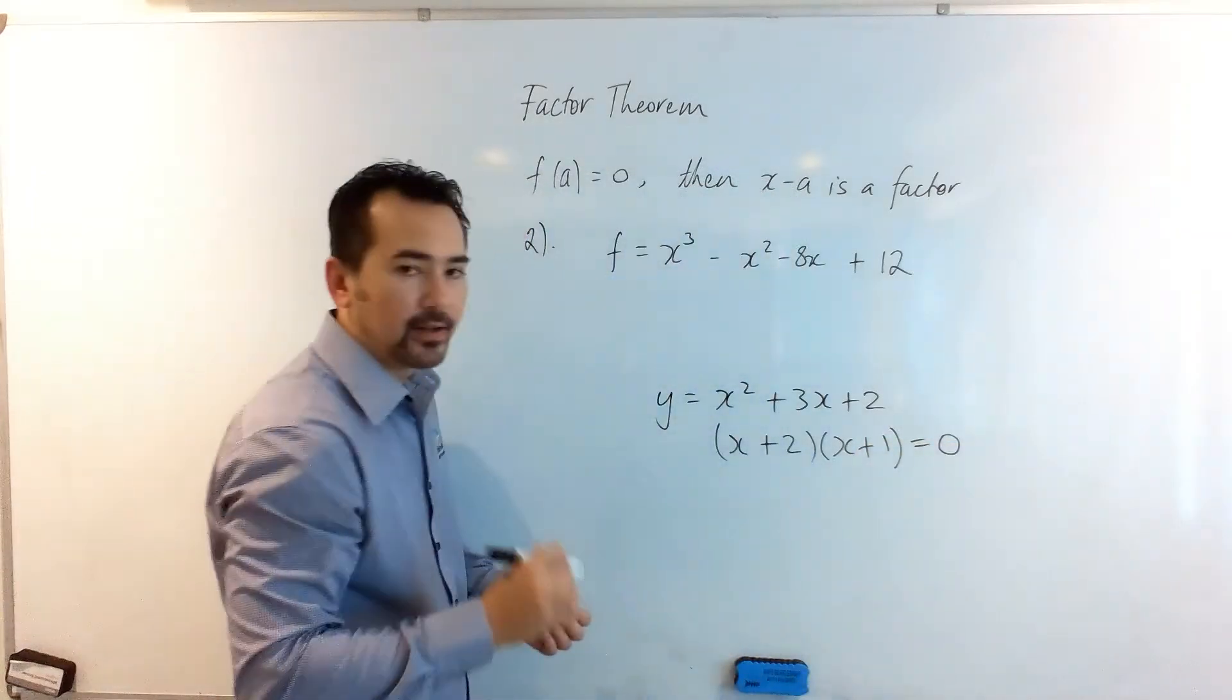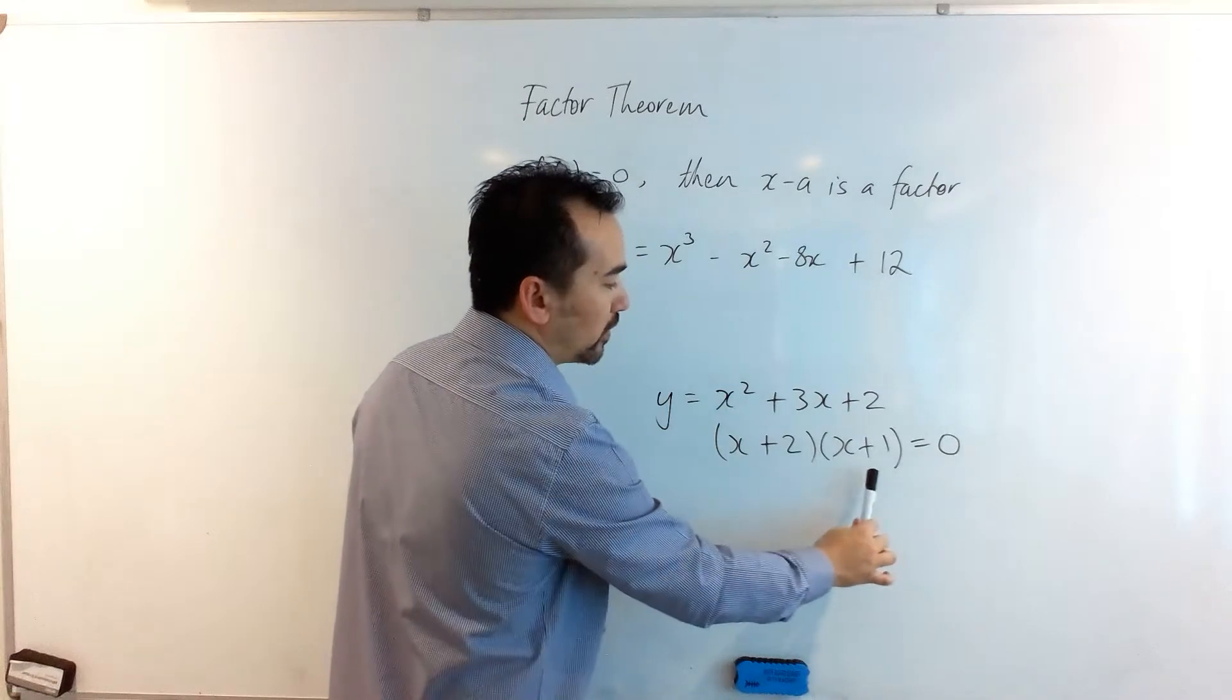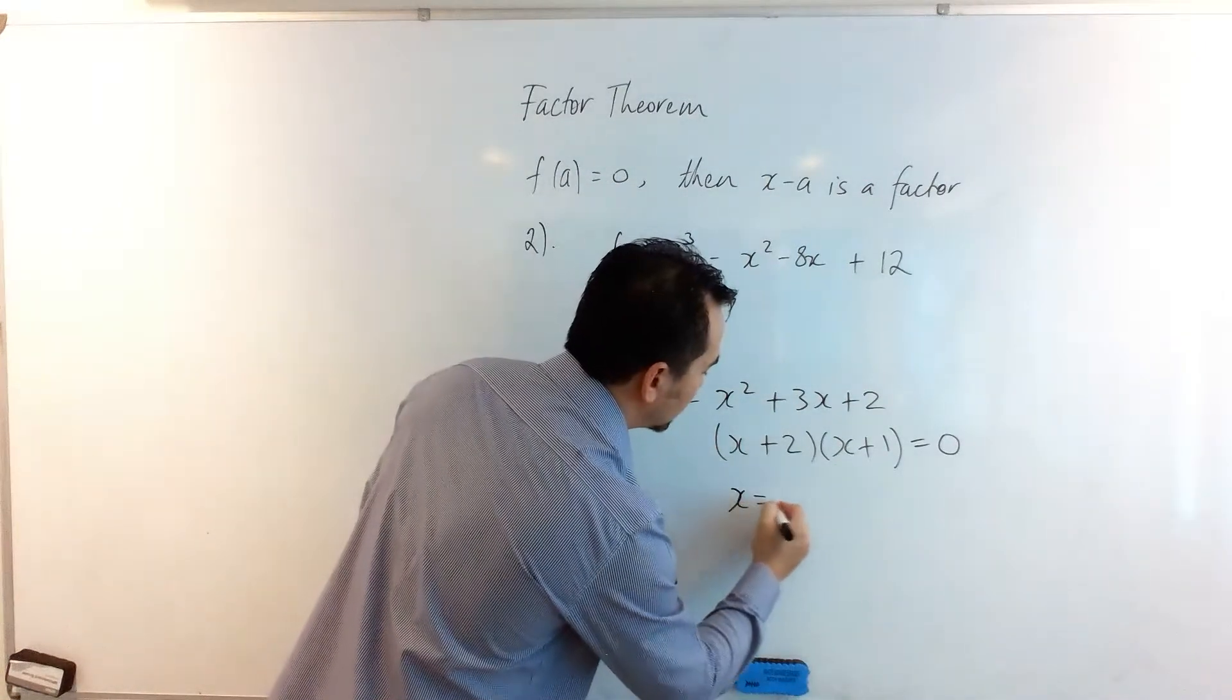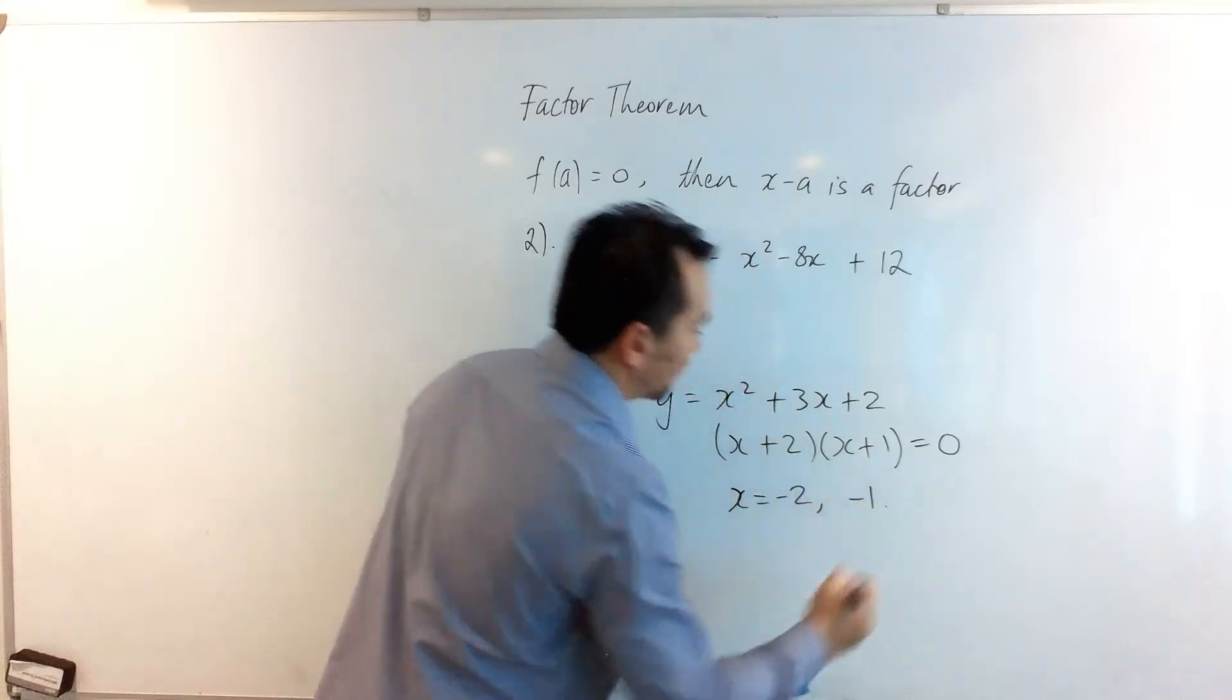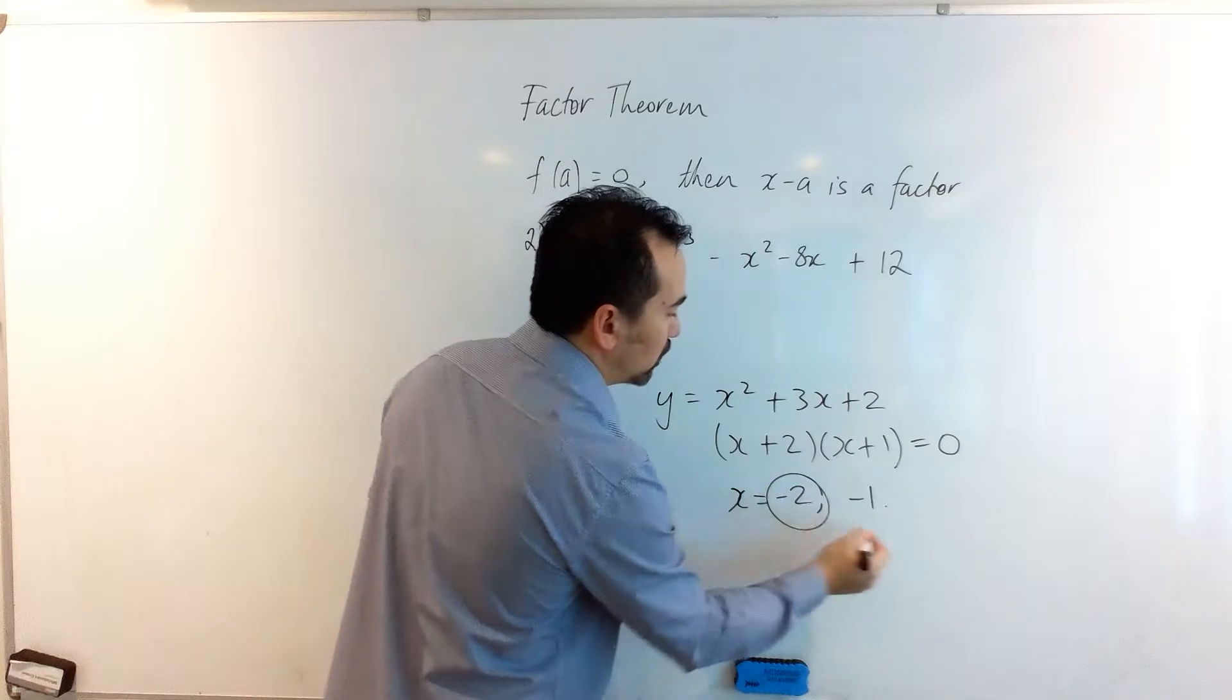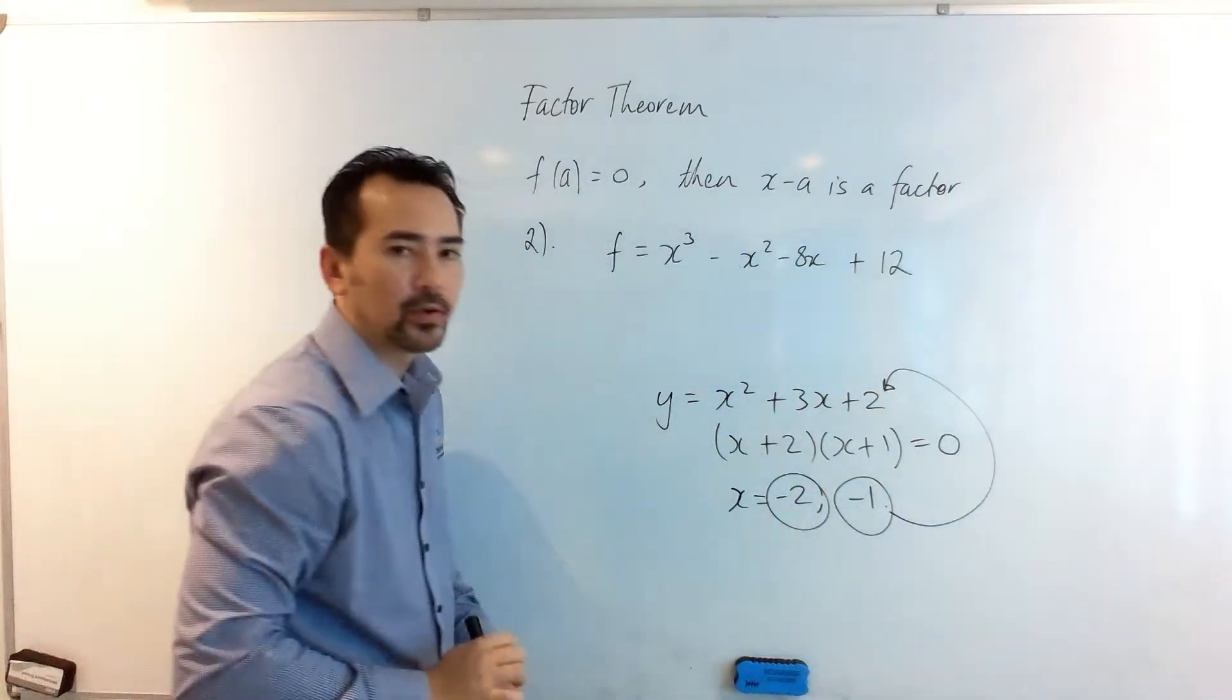this equal to 0. The null factor law says the left product is equal to 0 or the right product is equal to 0, or both. So we get x is equal to -2 or -1, and you'll notice that the roots are very much connected to this final term right there.